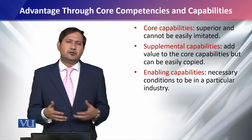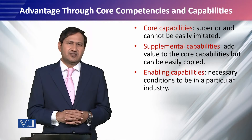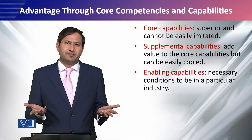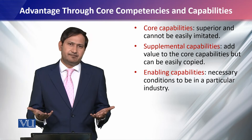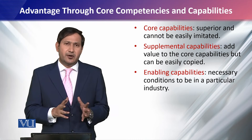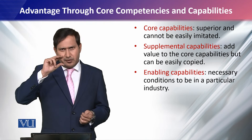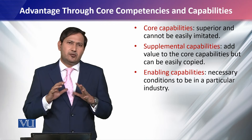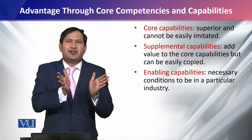For example, you need to have capital, a building or place, or information technology installed in your organization — these are enabling capabilities. Without them, you cannot perform the basic function, deliver the basic services, or produce the basic product. These are the necessary conditions to be in a particular industry, meaning that you are able to produce something which is at least acceptable to a sufficient customer segment.